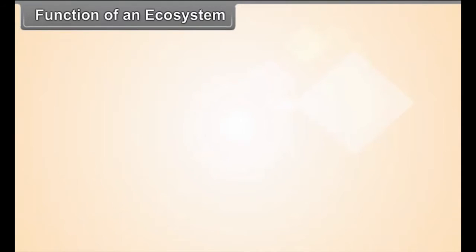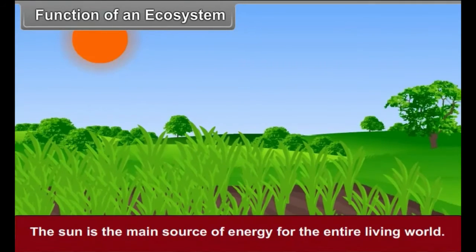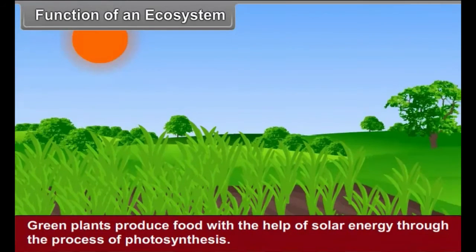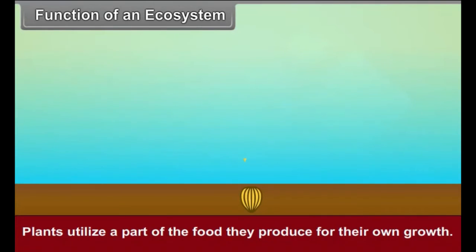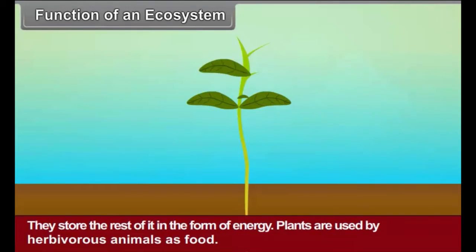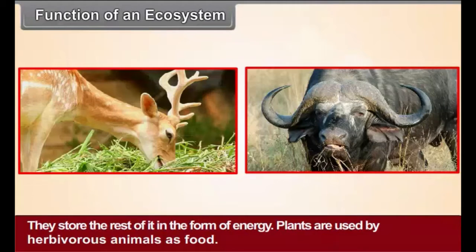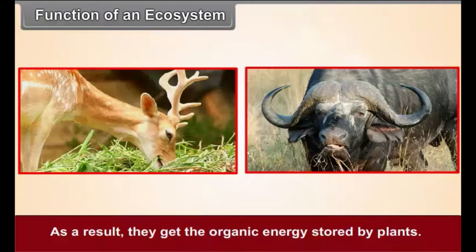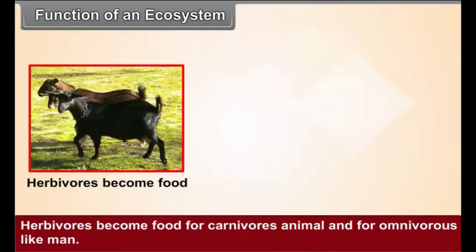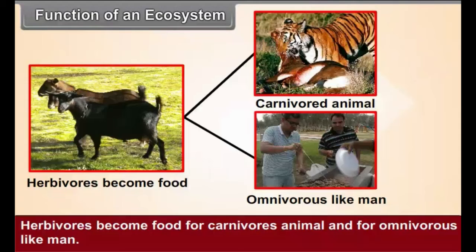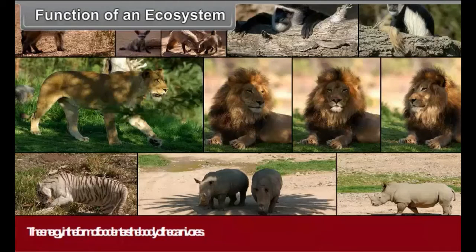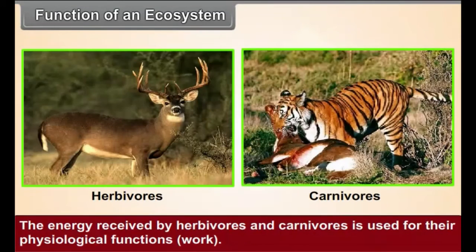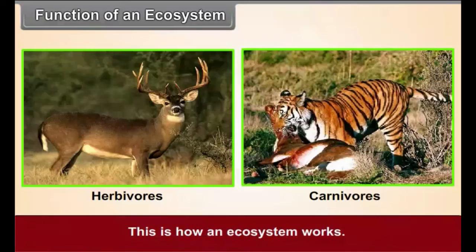Function of an Ecosystem: The sun is the main source of energy for the entire living world. Green plants produce food with the help of solar energy through the process of photosynthesis; hence they are called producers. Plants utilize a part of the food they produce for their own growth and store the rest in the form of energy. Plants are used by herbivorous animals as food, allowing them to get the organic energy stored by plants. Herbivores become food for carnivorous animals and for omnivores like man. The energy in the form of food enters the body of the carnivores, and the energy received by herbivores and carnivores is used for their physiological functions. This is how an ecosystem works.